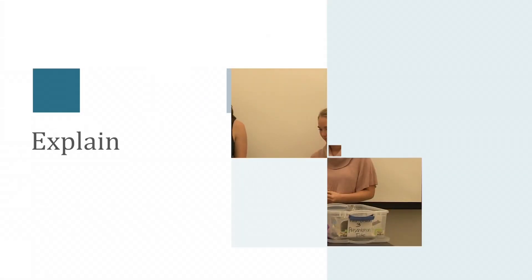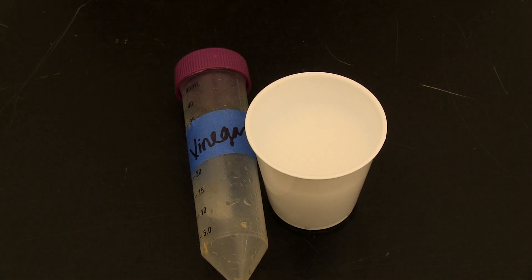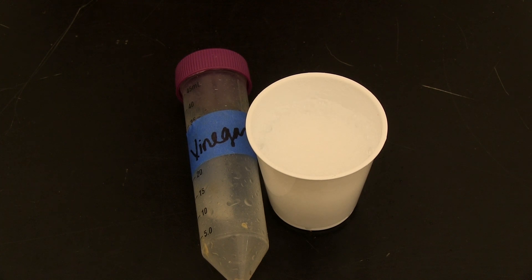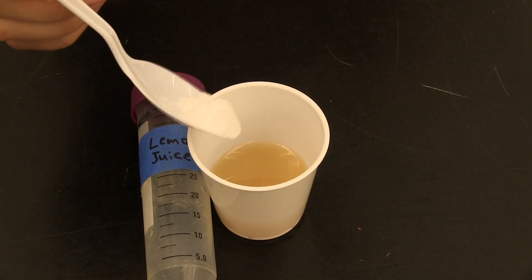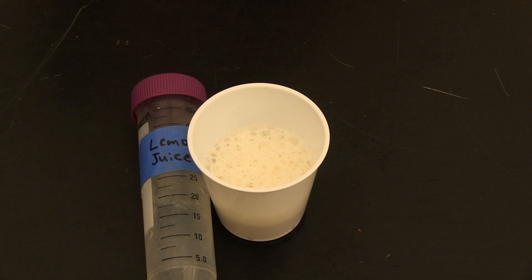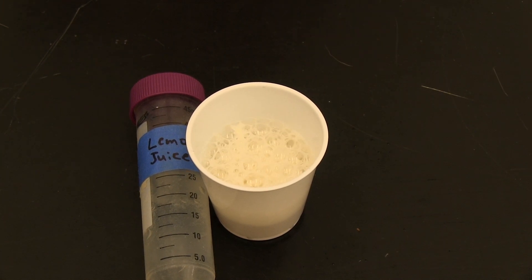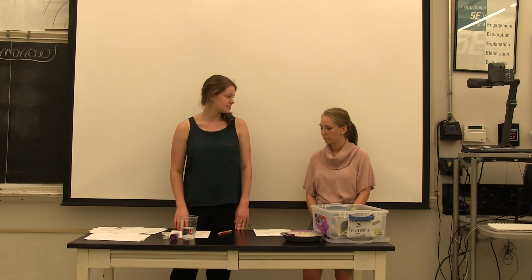So looking at your physical and chemical changes lab sheet, we're going to go over what you found. Pedro, what did you get for the vinegar and baking soda? What happened? It created bubbles and it gassed. So is this a chemical change or a physical change or neither? I think it was a chemical change. Good. Edward, what did you get for lemon juice and baking soda? We got bubbles and gas. So is that also a chemical change? That's also a chemical change. Awesome.